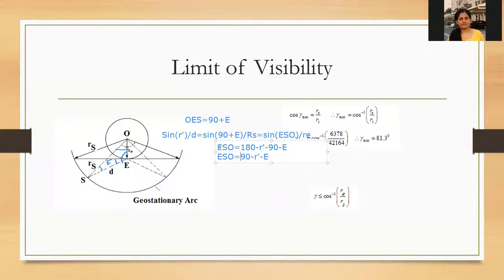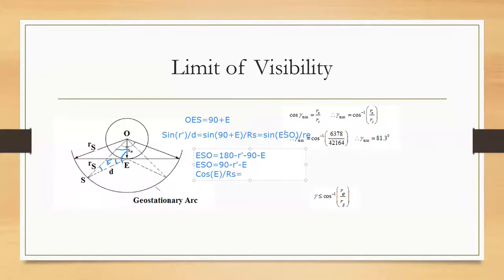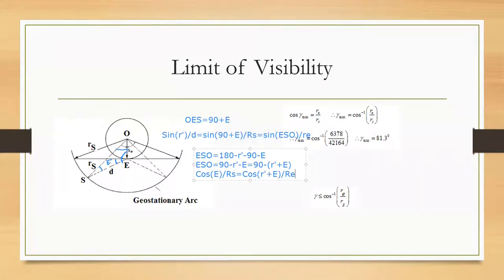Substituting these values, we get: sine of gamma dash divided by D, equals sine of (90 + E) divided by RS, equals sine of (90 minus gamma dash minus E) divided by RE. Since sine of (90 + E) = cos E, and sine of (90 minus gamma dash minus E) = cos of (gamma dash + E), we get cos of (gamma dash + E) divided by RE.